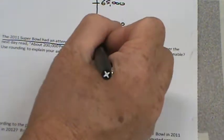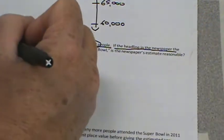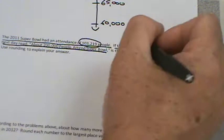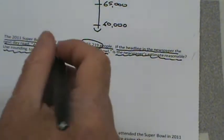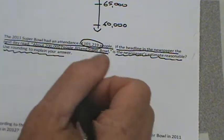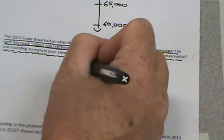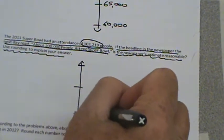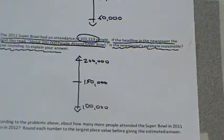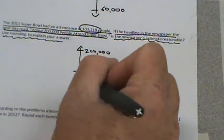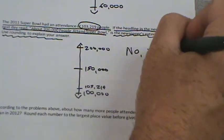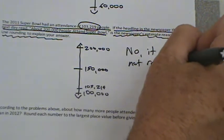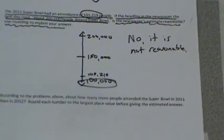More Super Bowl news. The 2011 Super Bowl had an attendance of 103,219. If the headline of the newspaper the next day read about 200,000 people attended Super Bowl, is the newspaper's estimate reasonable? Use rounding to explain your answer. They obviously were trying to round to the nearest 100,000. So we'll say 100,000, 200,000, and the midway point would be 150,000. But how many people actually attended the game? 103,219. That'd be way down here. No, it is not reasonable. 200,000 is way up there. 100,000 would have been a much better about sentence.